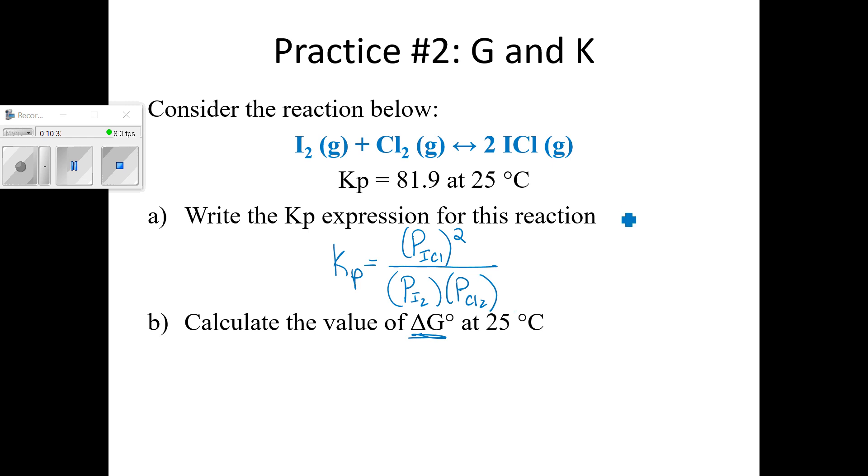If I were being asked to write a KC expression, let's just do a quick side-by-side comparison. It would look like this. That's what a KC would look like. Calculate the value of delta G. So I am given K. So it looks like I want to use this relationship. Delta G equals negative RT ln K.